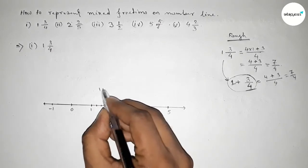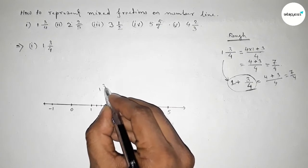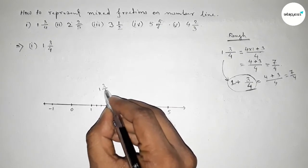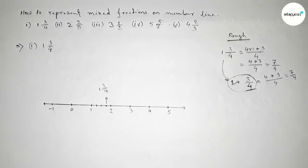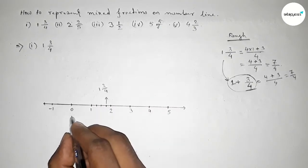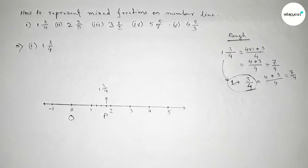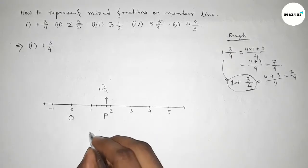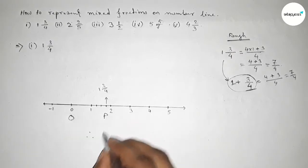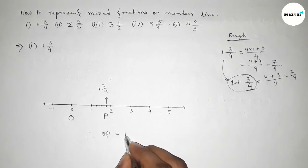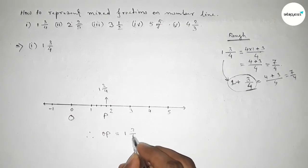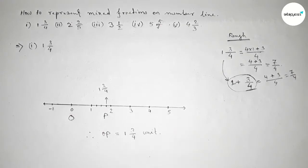From point O to point P, this total length is one and three over four on the number line. Therefore, the length OP equals one and three over four units. Next, I'm going to represent the number two and two over five on the number line.